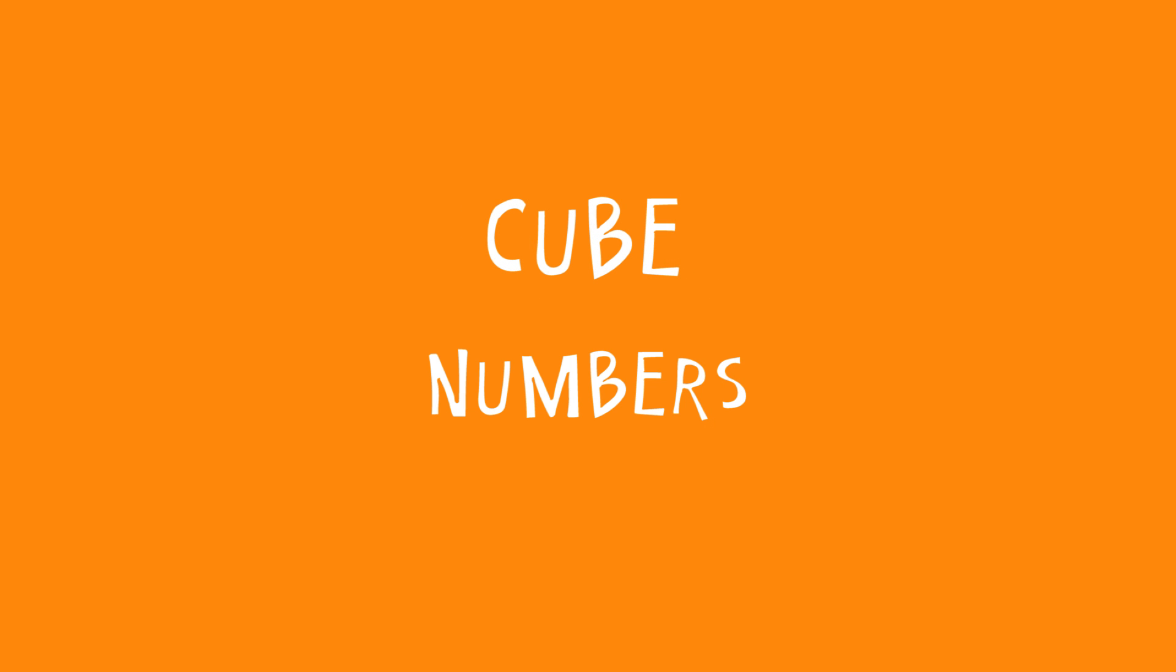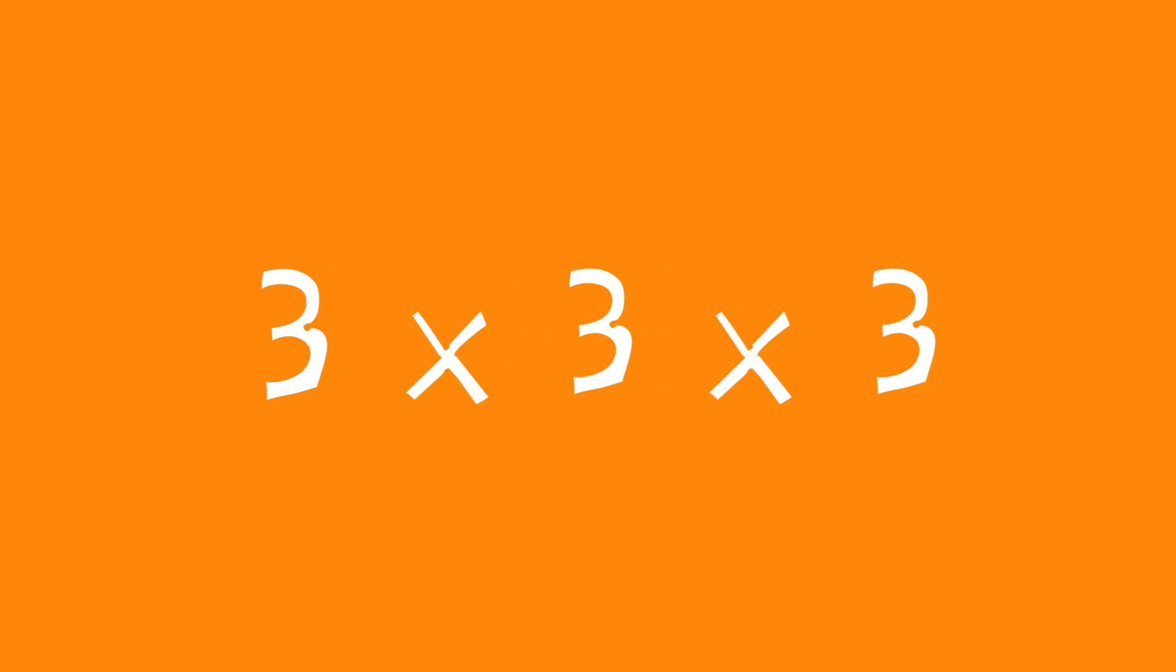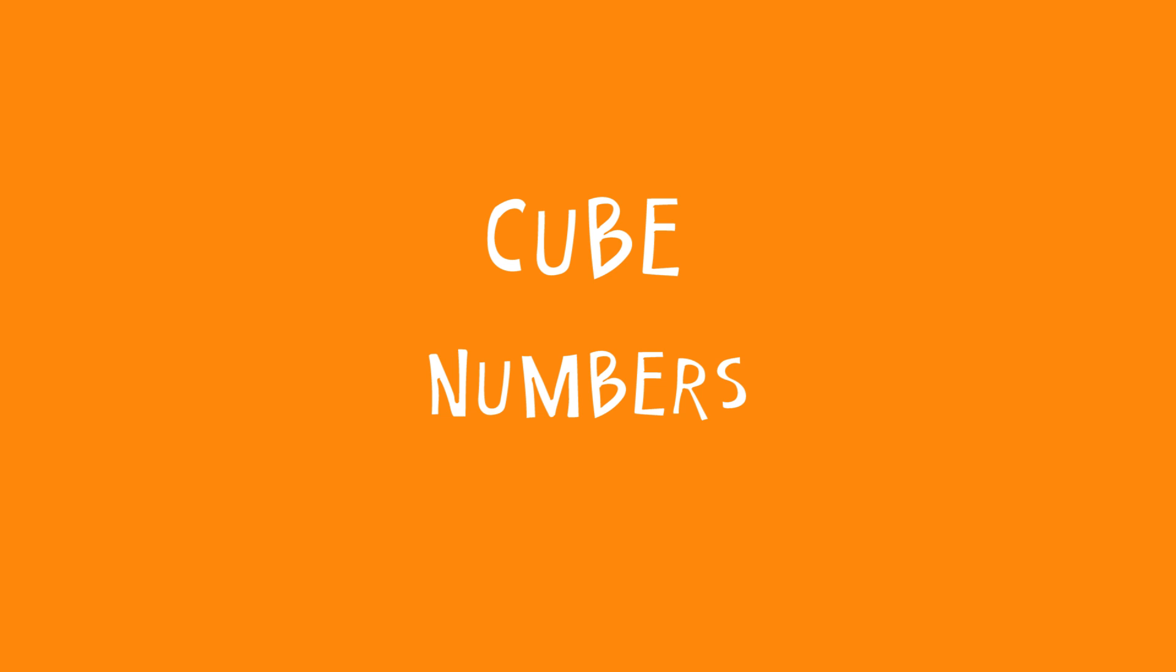Cube numbers can be worked out in just the same way, except that you need to multiply each integer by itself 3 times. The first few cube numbers are 1, 8, 27 and 64, and they get big pretty quick.